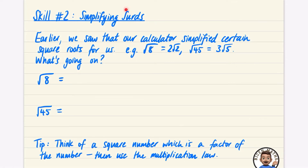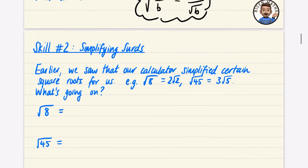We're going to do skill number two: simplifying surds. Earlier in this playlist I showed you that our calculator simplified certain square roots for us — we typed in the square root of 8 and it gave us 2√2 when you press the S→D button, and the square root of 45 gave us 3√5. We need to try and figure out what is happening.